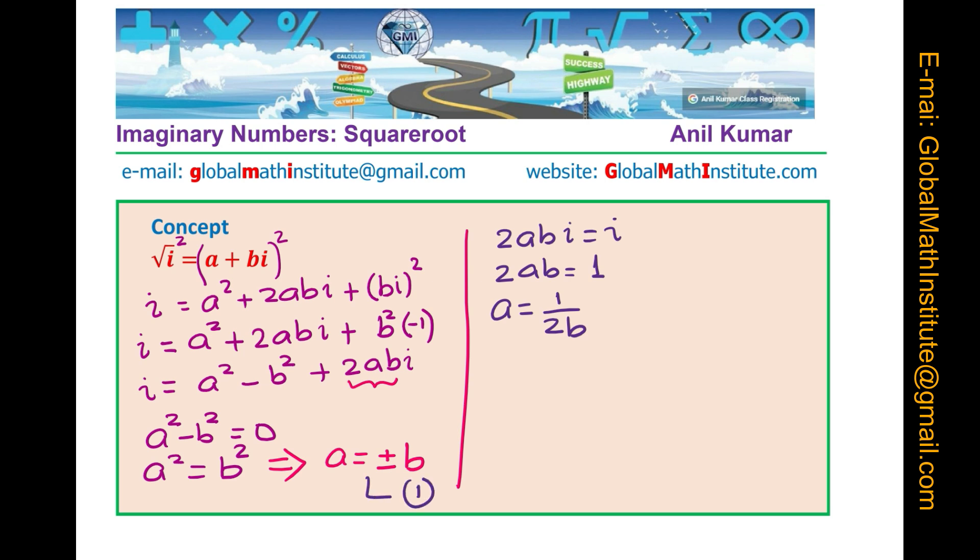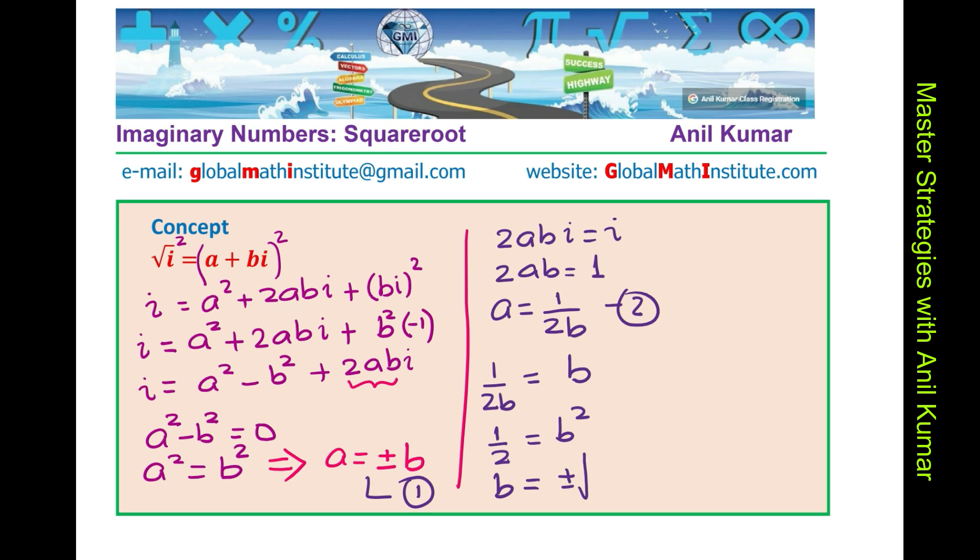So, we are having two equations, equation 1 and equation 2. And from these two equations, we are quoting what a is, which is equal to 1 over 2b and is also equal to plus or minus b. So, let us go with the plus 1 first. So, that really means that half is equal to b square or basically, if we square it, square rooting gives us plus minus square root of half.